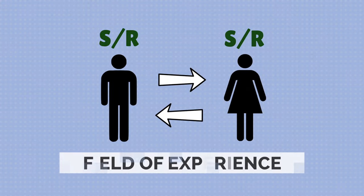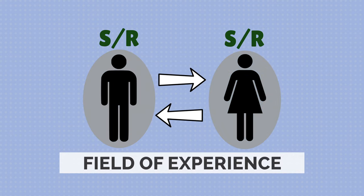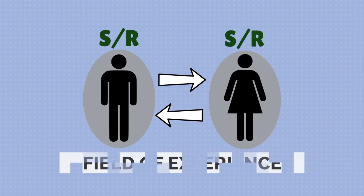Another aspect of this is what we call the field of experience. I come into a situation and you come into a situation with a whole set of life experiences, values, and beliefs, and that's going to shape how we send, receive, and interpret the messages that we are exchanging. That's a really interesting aspect that the Shannon and Weaver linear model does not capture.